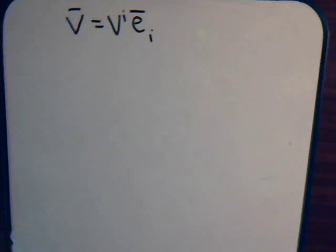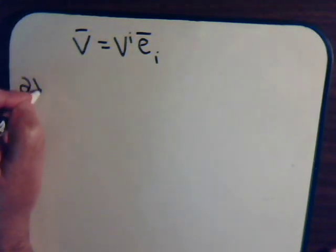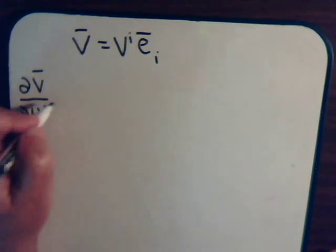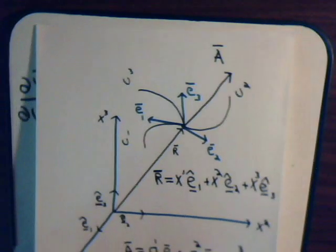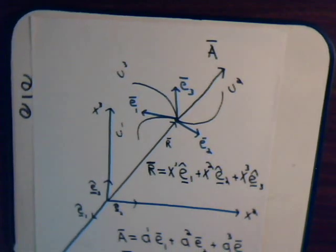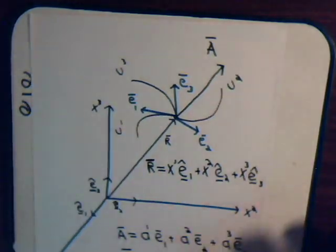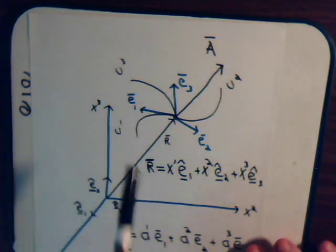Let's say that we have a vector that is expressed in terms of its contravariant components and we want to take the derivative of the vector with respect to each of the curvilinear coordinate axes. Here is just a generalized curvilinear coordinate system with axes u1, u2, u3 — we could have more if we wanted. Here is some vector a, and now we're going to take the derivative of the vector with respect to each one of the coordinate axes.